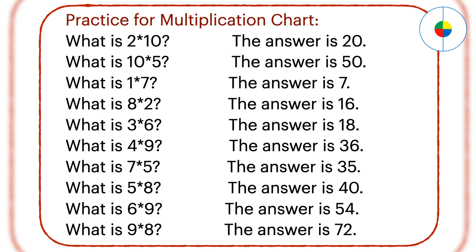What is 4 times 9? 4 times 9 is the same as 9 times 4. Any number multiplied by 4, just add the same number, then double the result. To calculate 9 times 4, first calculate 9 plus 9 equals 18, then 18 plus 18 equals 36. There is another way: any number multiplied by 9, the 10's position is the number minus 1, and the 1's position is its pair number. For 4 times 9, the 10's position is 4 minus 1 equals 3, and the 1's position is the pair number of 4, which is 6. So the answer is 36. This looks easier than the first method.